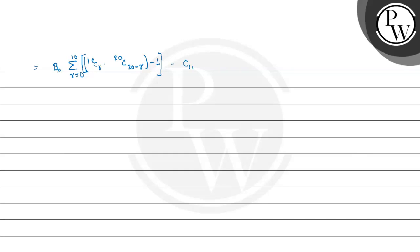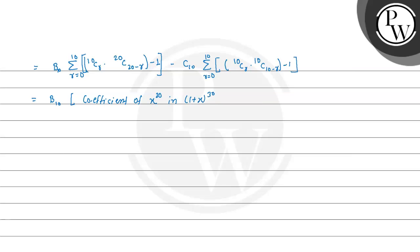We can write B10 times summation of 10Cr·20C(20 minus r) from r=0 to 10, minus 1 — which equals the coefficient of x^20 in the expansion of (1+x)^30, minus 1. Minus C10 times summation of 10Cr·10C(10 minus r) from r=0 to 10, minus 1 — which equals the coefficient of x^20 in the expansion of (1+x)^20, minus 1.